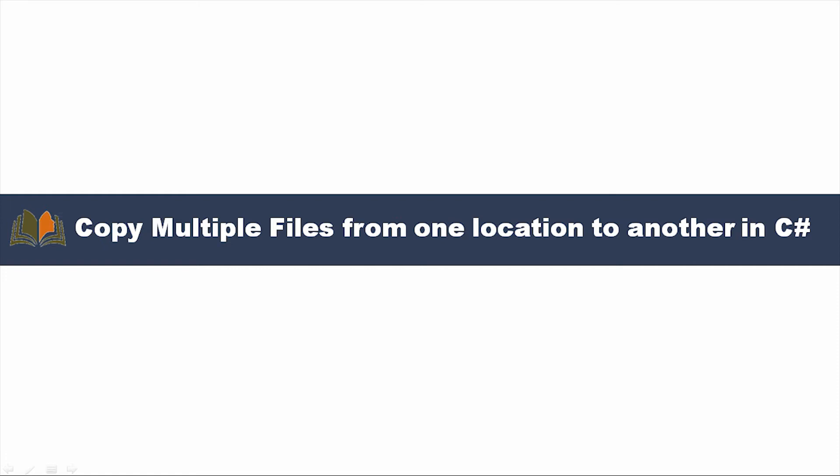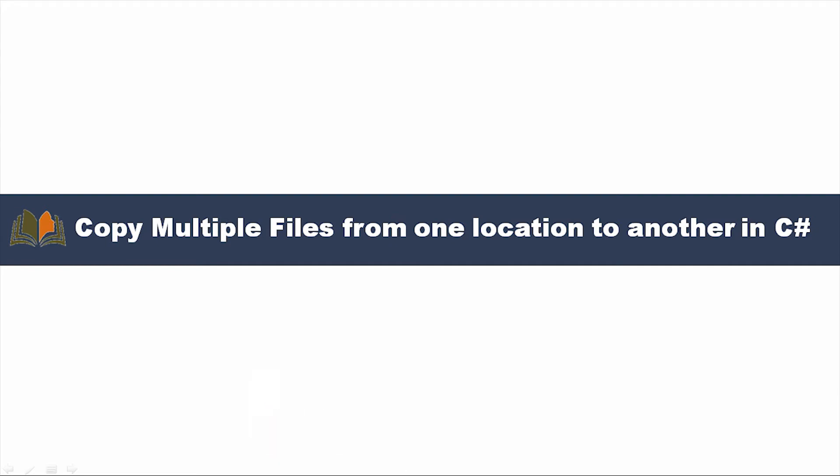First, I will take one folder which contains multiple files — text files, PDF files, photos, or any kind of file. I will filter some files from that folder, and by using a foreach loop with the File.Copy method, I will copy those files from the source location to the destination location. The loop is essential to copy multiple files. We can use a foreach loop or a for loop — anything is fine.